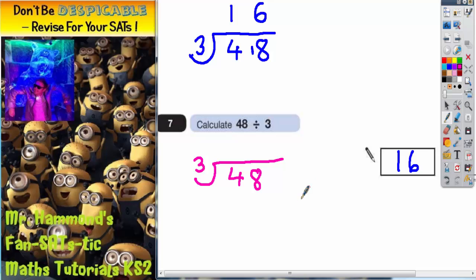So an easy chunk of 3 to subtract would be 10 lots of 3, and 10 lots of 3 is 30. So if we subtract 30 from 48, see what we've got left over.